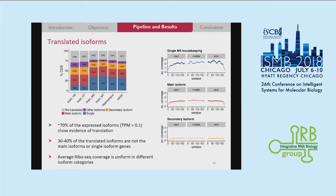With this criteria, we have been able to identify 70% of the expressed isoforms with evidence of translation. Among those, between 13 and 40% are not from single isoform genes or are not the most expressed ones — so they are less expressed isoforms within the gene. And if we look at the coverage along the CDS in three different windows, at the start, middle, and end of the CDS, we can see that this coverage is uniform, even when comparing the control set, the most expressed isoforms, or secondary isoforms.